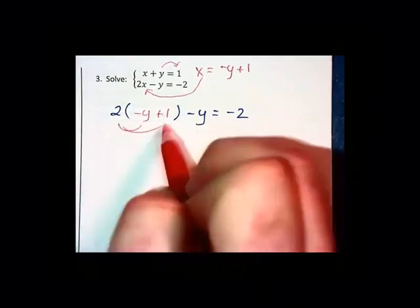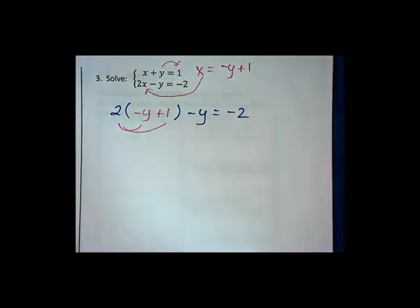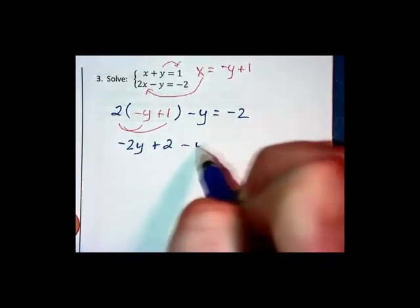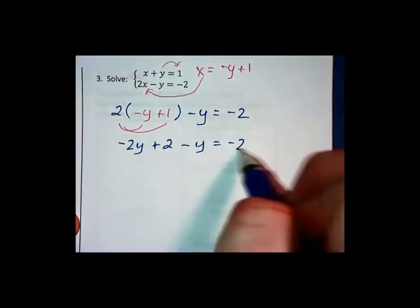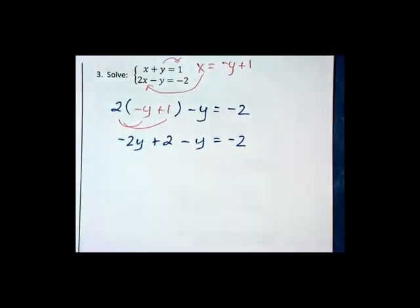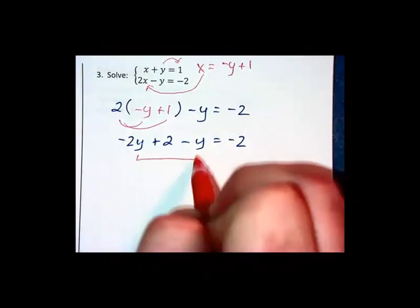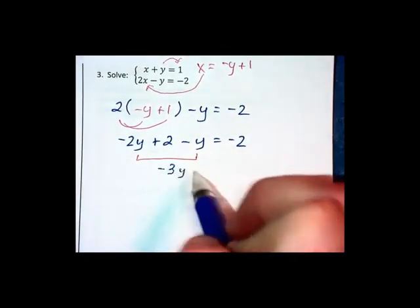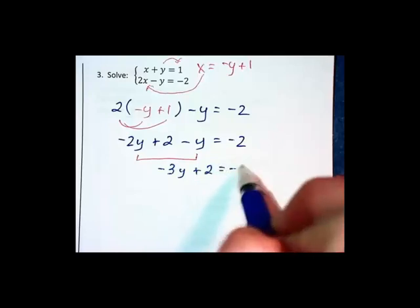Now we're going to do the distribution. We get negative 2y plus 2 minus y equals negative 2. Combining like terms on the left side, the negative 2y and the minus y combine together, giving us negative 3y plus 2 equals negative 2.